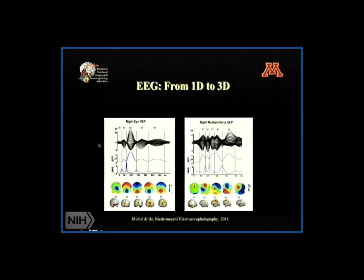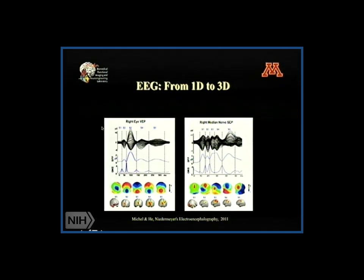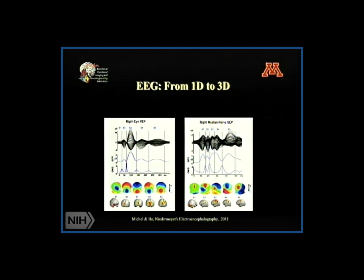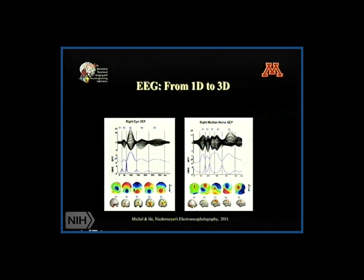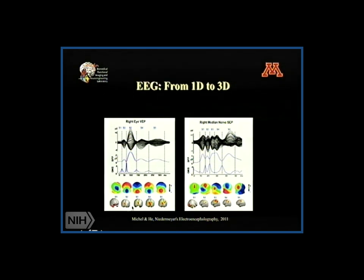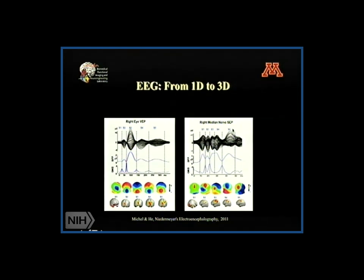This slide illustrates the progression of EEG. Hans Berger discovered EEG in the 1920s. At that time, placing an electrode produced a one-dimensional time signal reflecting the mass response of the neural network. The field progressed by placing multiple electrodes over the scalp for topographic mapping. Nowadays, we are able to image the source distribution — for example, visual evoked potential activity in the visual cortex, and somatosensory evoked potential activity mapping sensory responses.